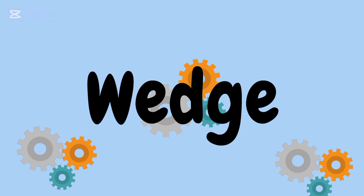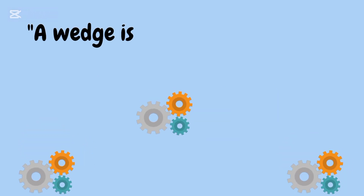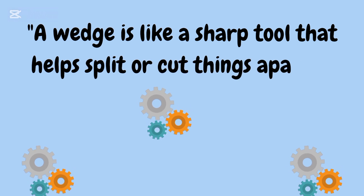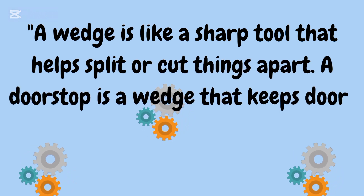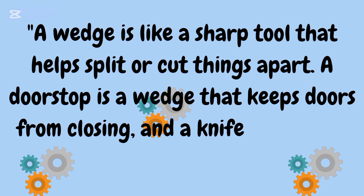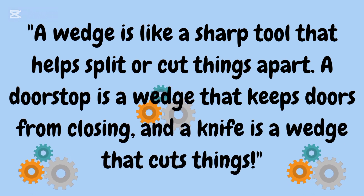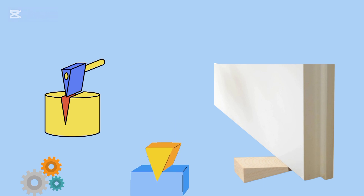Next is wedge. A wedge is like a sharp tool that helps split or cut things apart. A doorstop is a wedge that keeps doors from closing, and a knife is a wedge that cuts things. You see examples of a wedge in that picture — a doorstopper.